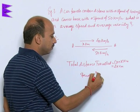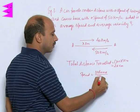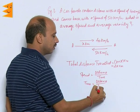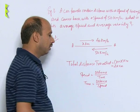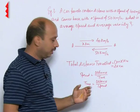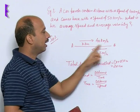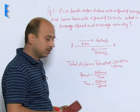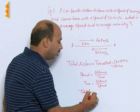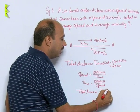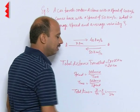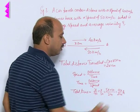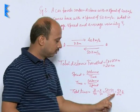Since speed equals distance over time, time equals distance divided by speed. While going A to B, time equals x over 40. While coming back B to A, time equals x over 50. Total time equals x/40 plus x/50. The LCM of 40 and 50 is 200, so total time equals 5x plus 4x over 200, which is 9x/200 hours.